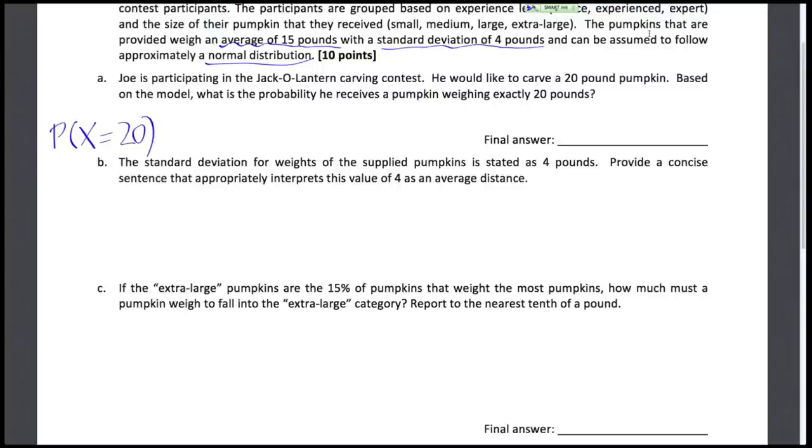Now remember with continuous distributions, any continuous distribution, the probability of just one precise number occurring—so if this is 20 here, that's 15, the mean, this is 20—probabilities for continuous distributions are represented by areas and this area of just one number is a line and a line has no area. Thus the probability of getting an exactly 20 pound pumpkin is just zero.